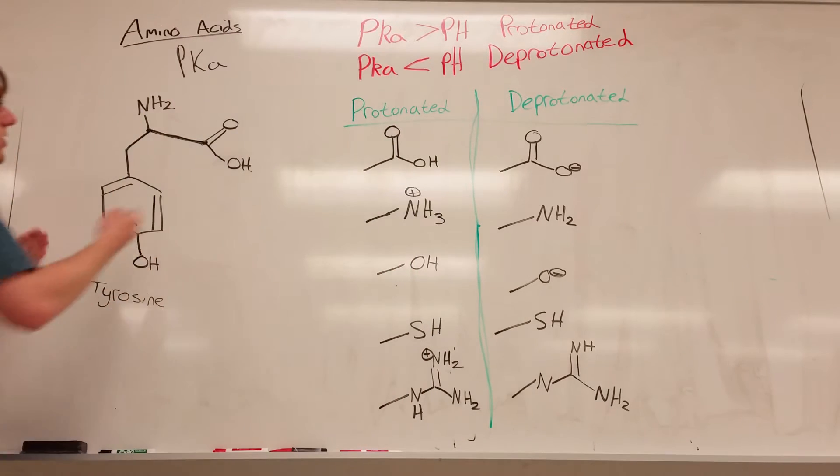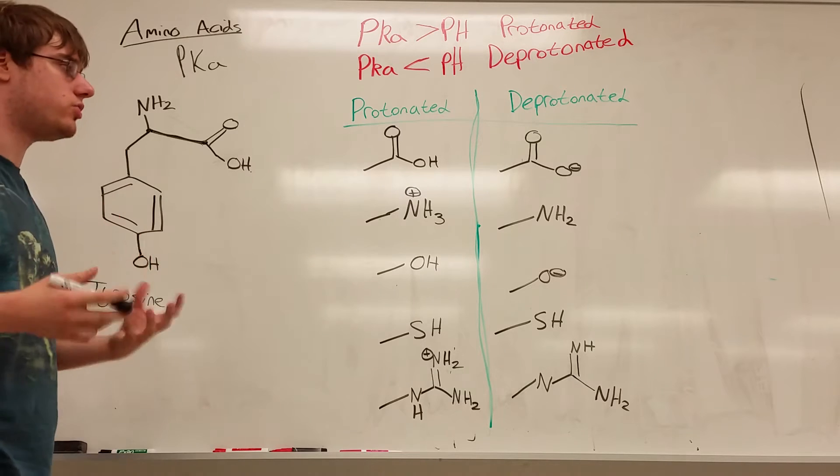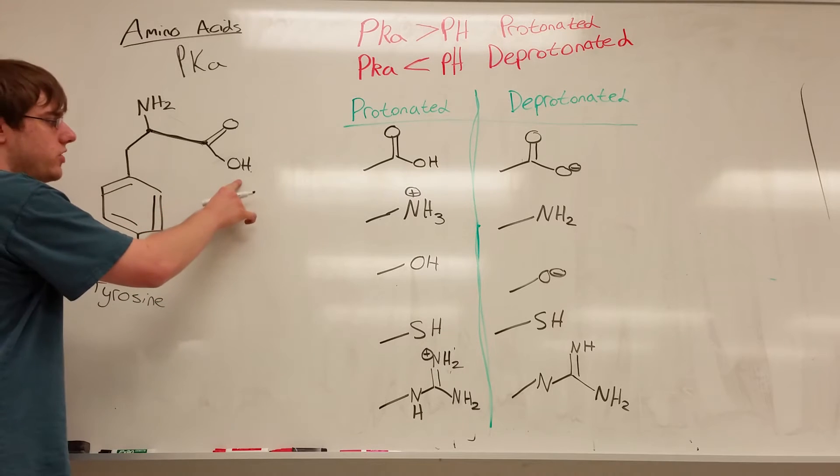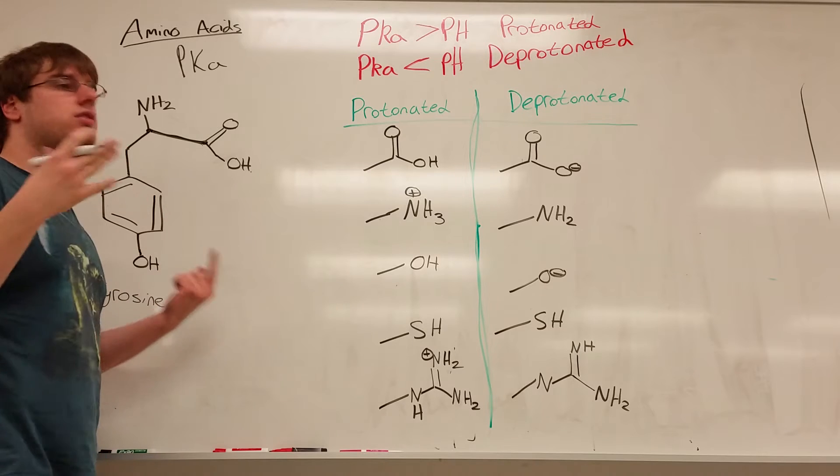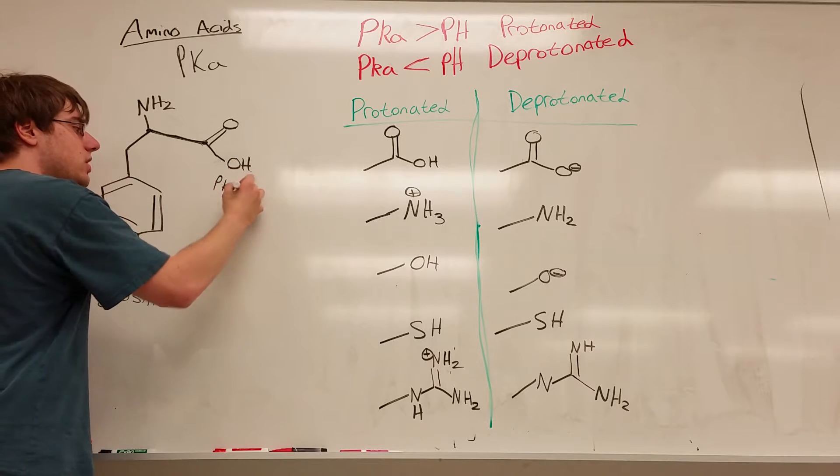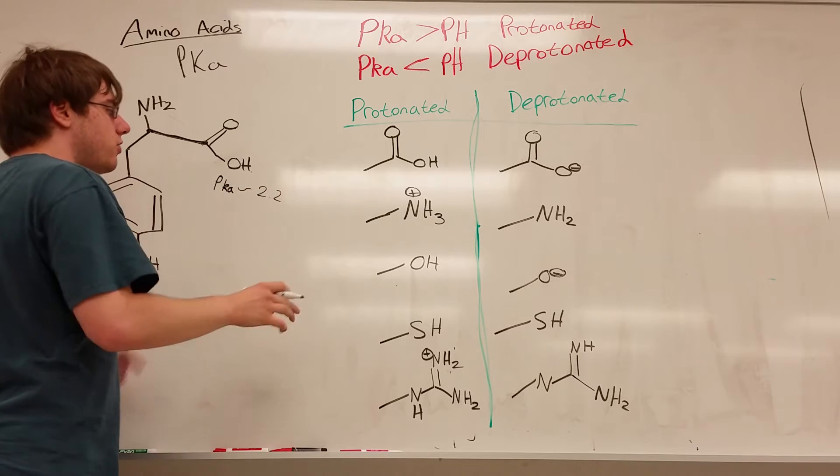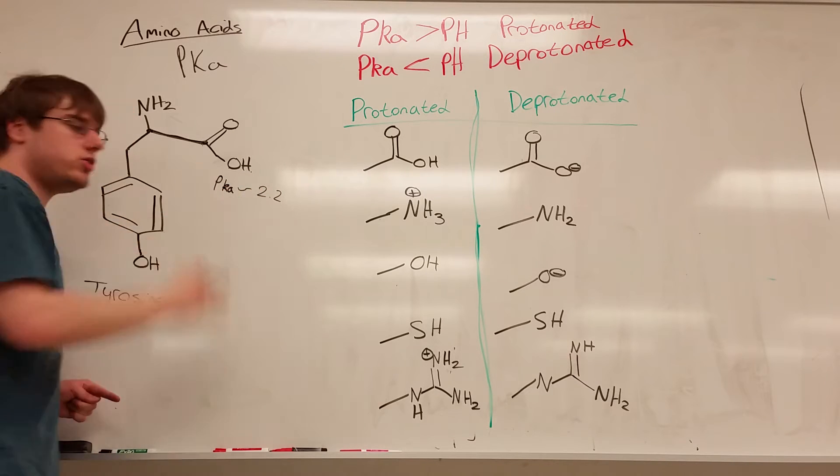If we look at tyrosine, for example, there are three things that contribute to the overall acidity of a solution that it's mixed into. First of all, the carboxylic acid group, we know based on its name, is an acid, and its relative acidity is given by a pKa value of usually around 2.2. For most amino acids, it's usually low to mid-2s.